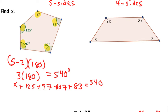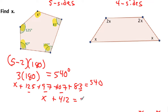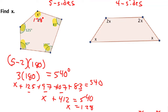Now it's just a matter of combining like terms. Add all these numbers together. So X plus — what does all that add up to? 412. So we get 540 minus 412, which is 128. X equals 128. We can check it by adding them all up and it should equal 540 degrees.